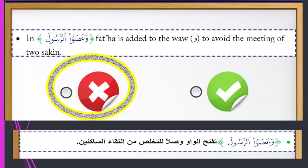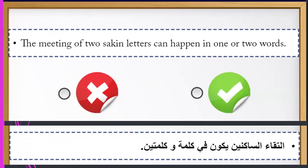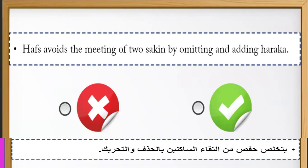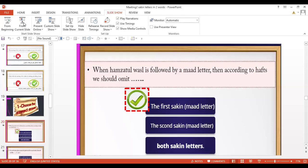Yes, it's true. The meeting of two sukun letters can happen in one or two words. True or false? Yes, it's true. The meeting of two sukun letters is avoided by omitting and adding haraka.